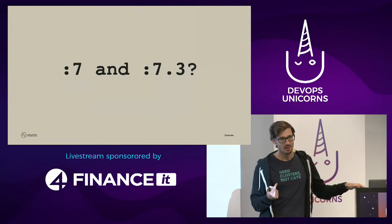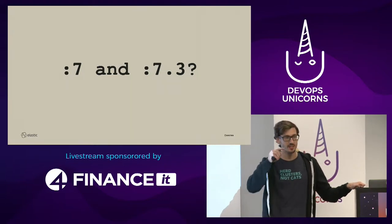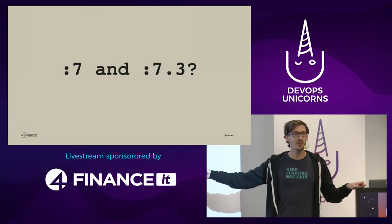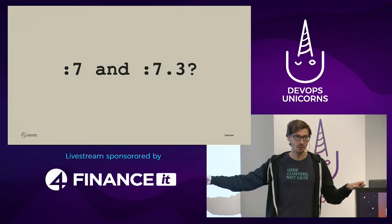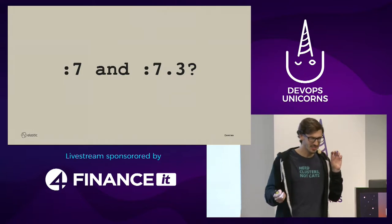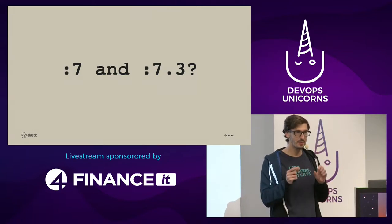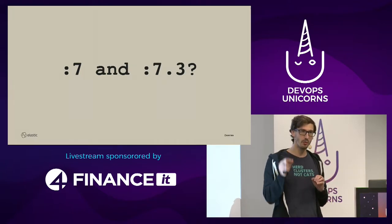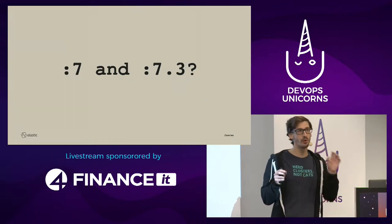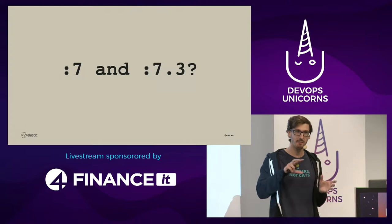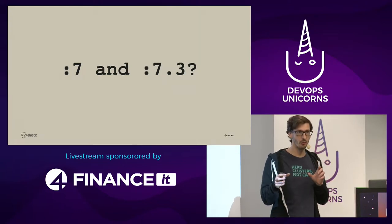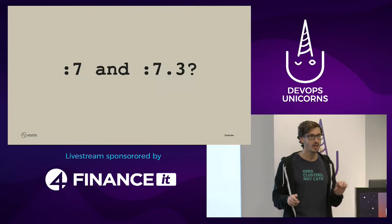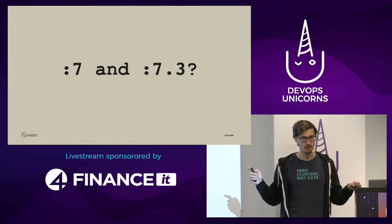Sometimes people ask about version ranges — specifying just the major version '7' or minor version '7.3.' Do we support those? No. Because Elasticsearch, the way it stores data via Lucene, is sometimes picky — if something changes between versions and you create data on a newer version, it doesn't want to migrate to an older node, resulting in an unbalanced cluster. That's why we don't support version ranges and have no intention of adding them. Only exact version numbers will work.